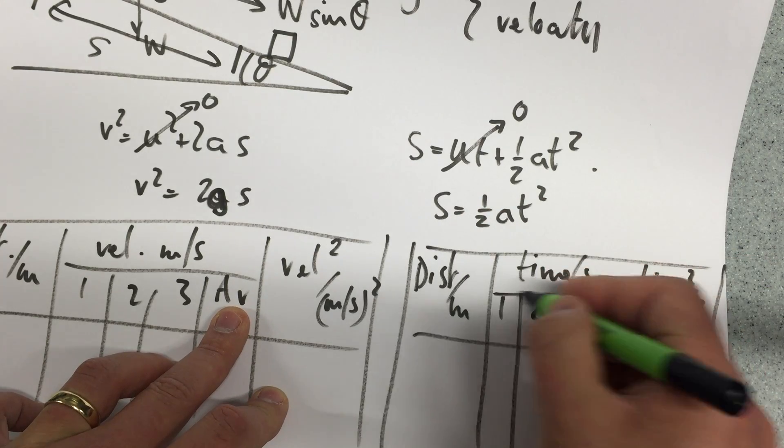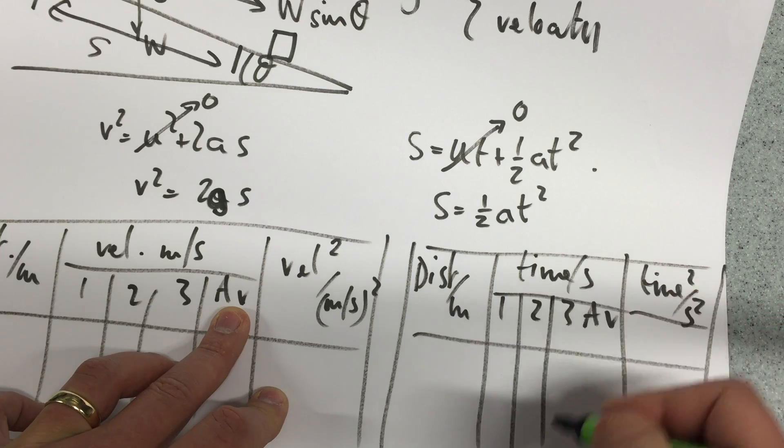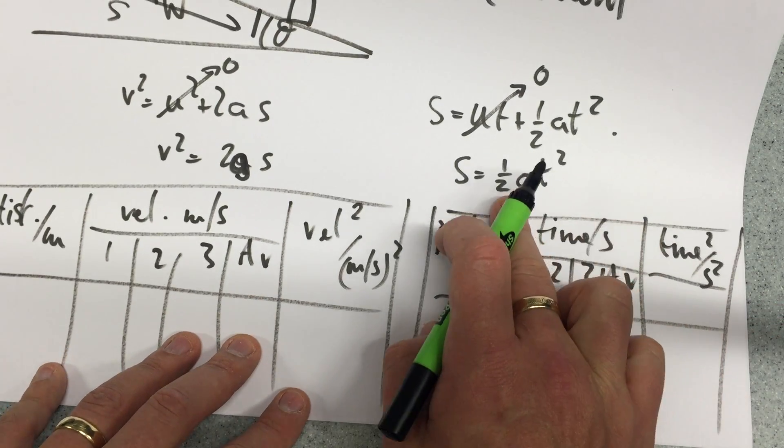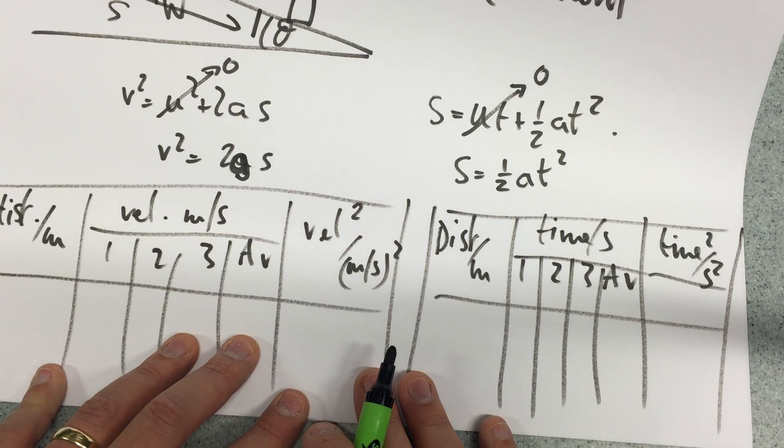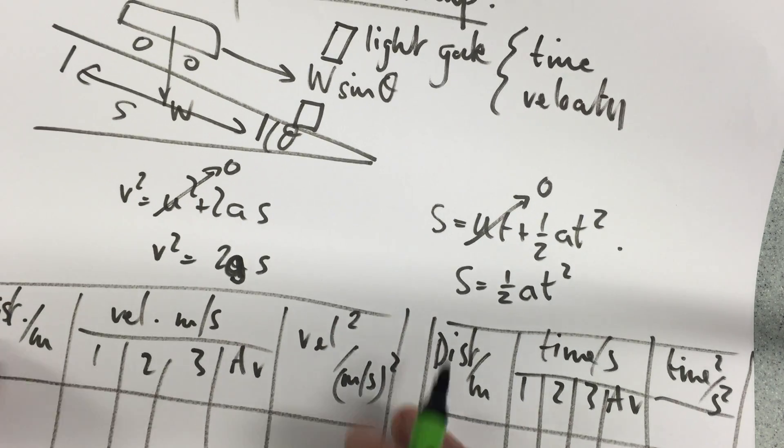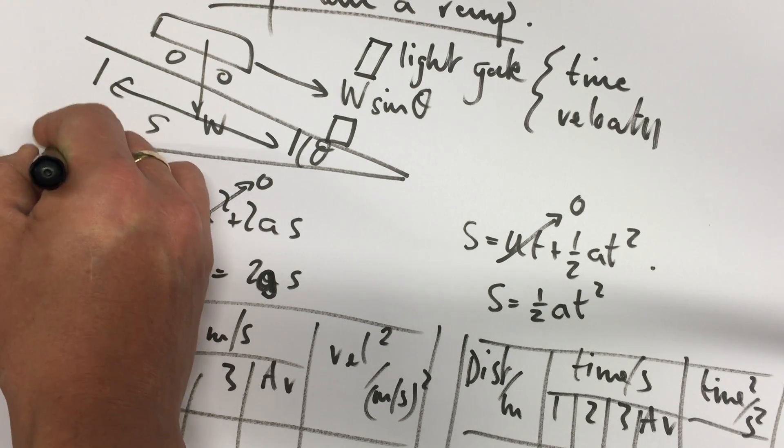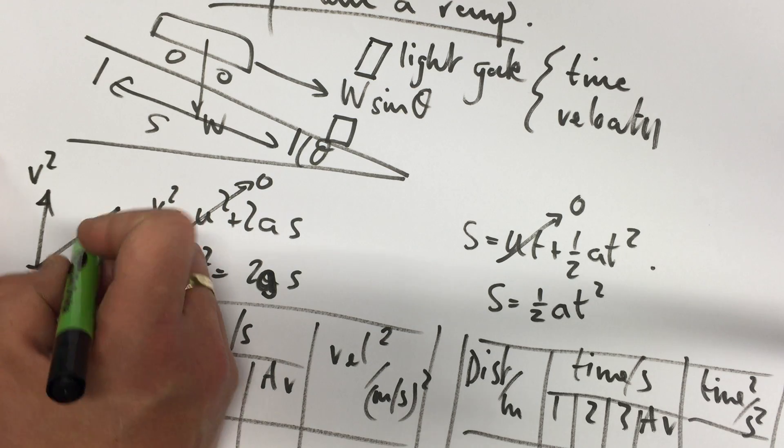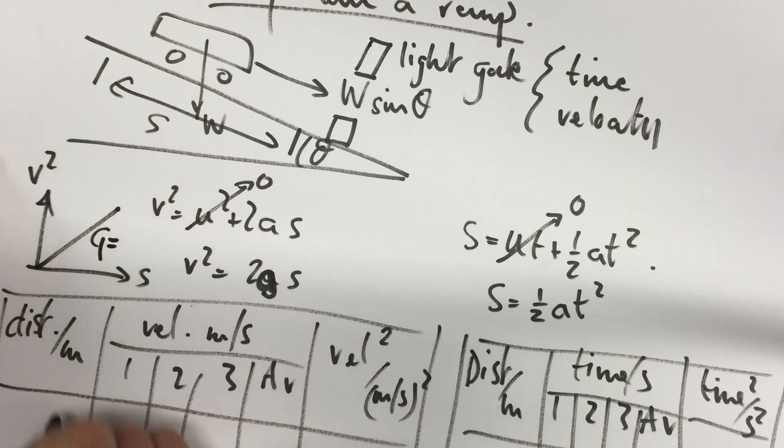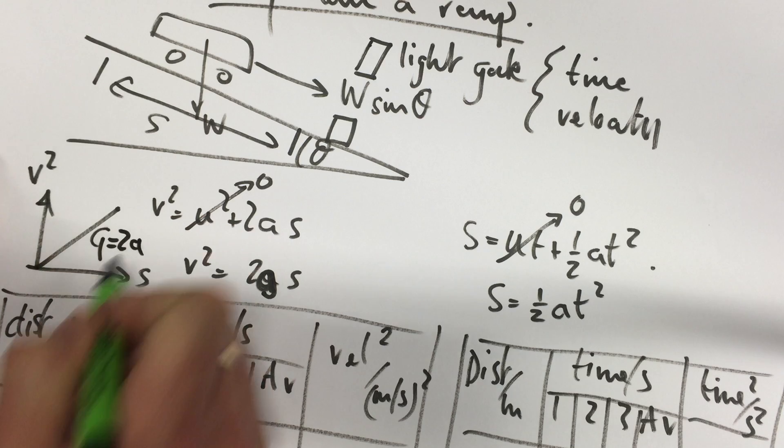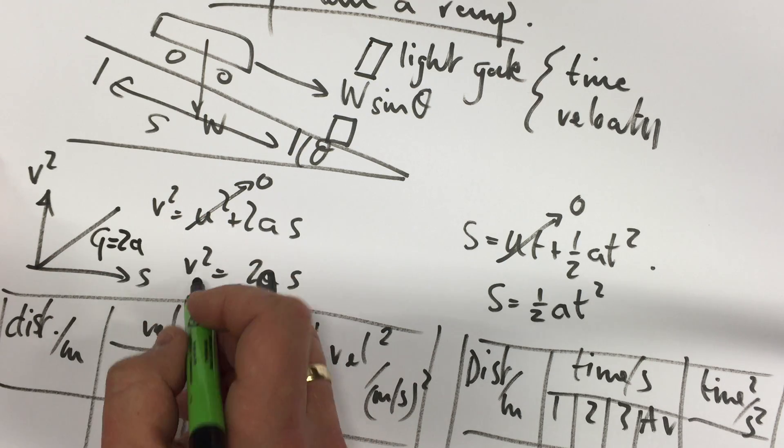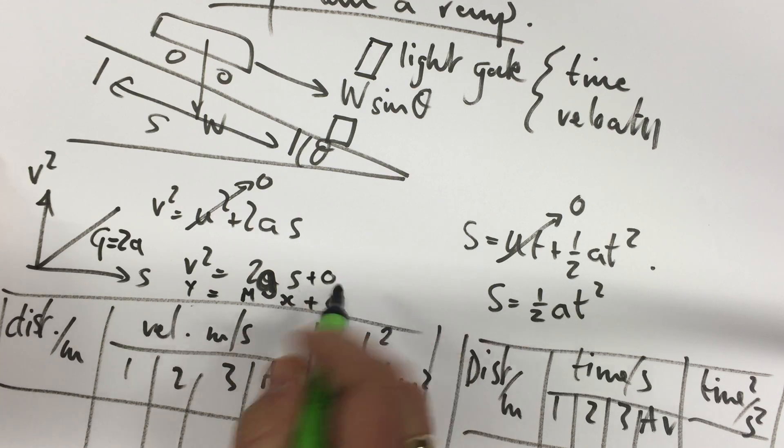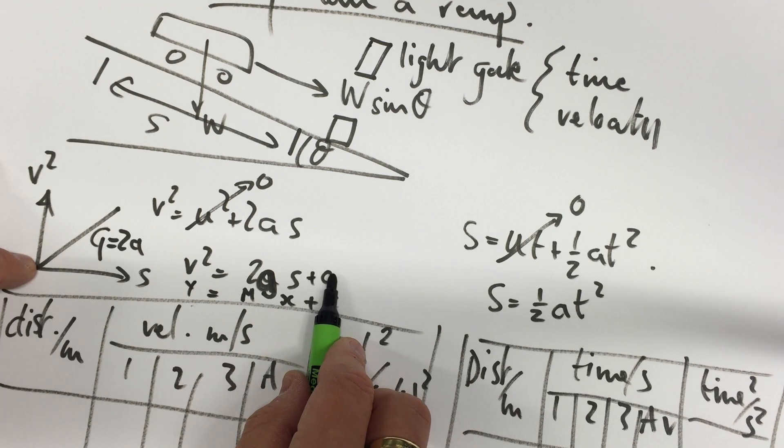And both would yield me a good approximation for what a is in both cases. In this one of course I'll be plotting v squared against s and I'll get a straight line where my gradient will be 2a. Why? Because y equals mx plus c plus 0. So it should go through the origin.